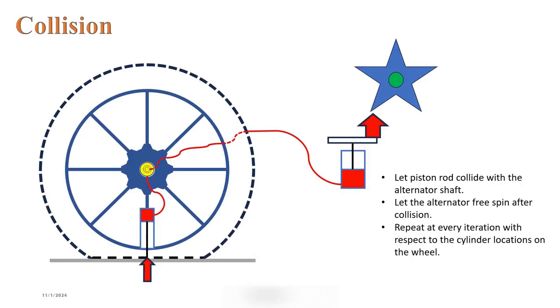The idea is to let the output shaft with amplified force collide with the alternator shaft. Let the alternator free-spin without restricting the movement to the output shaft displacement, and repeat at every iteration with respect to the smaller piston position on the wheel.